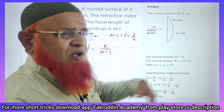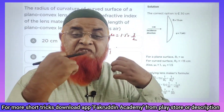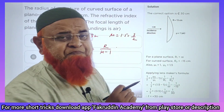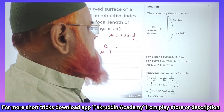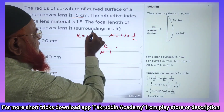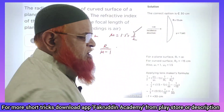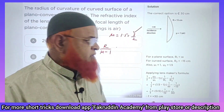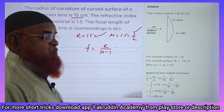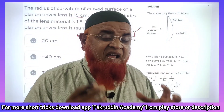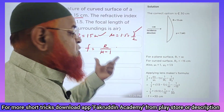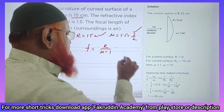My dear friends, how can you solve the problem of a plano-convex lens whose refractive index is given as 3/2 or 1.5 — both are the same — and the radius of curvature is given as 15 centimeters? In such cases, how can you find out the focal length? It's very simple.